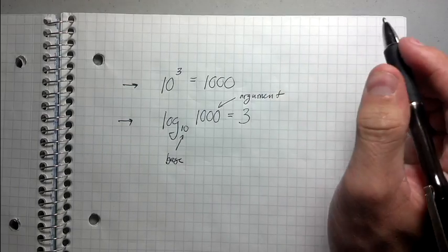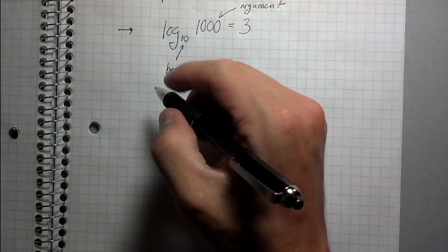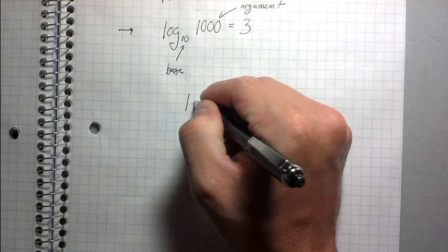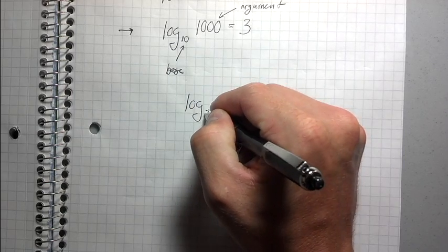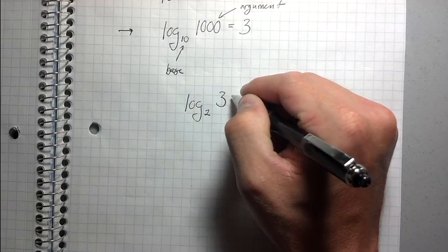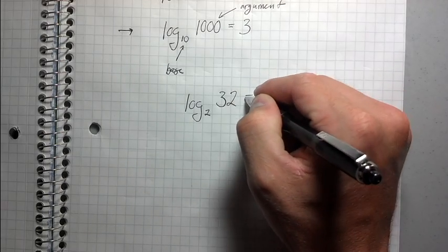I'm going to give an example here, I'm going to give another example. So, imagine that I had this. If I had logarithm base 2 of 32, what would this equal?